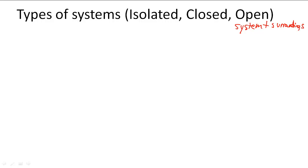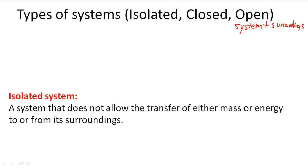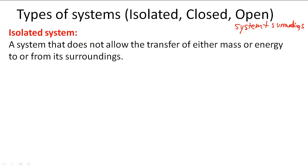There are three types of systems. There's an isolated system, a system that does not allow the transfer of either mass or energy to or from its surroundings.